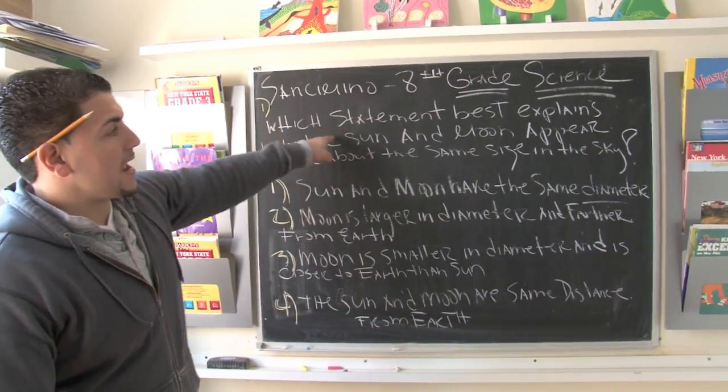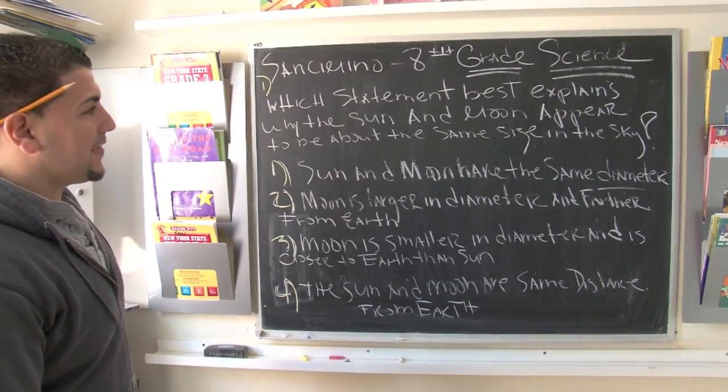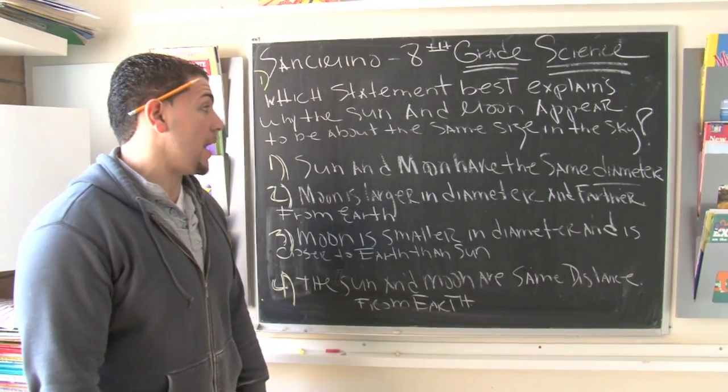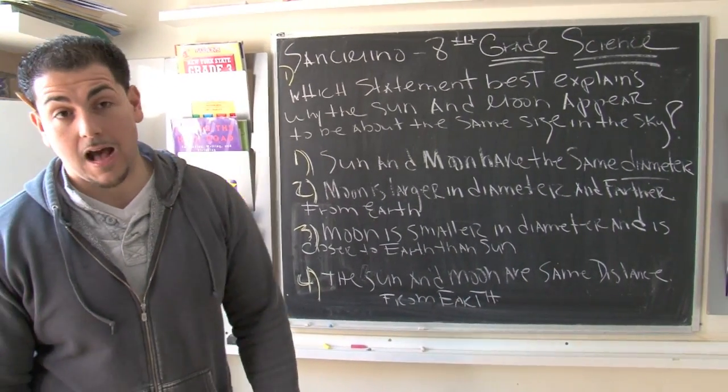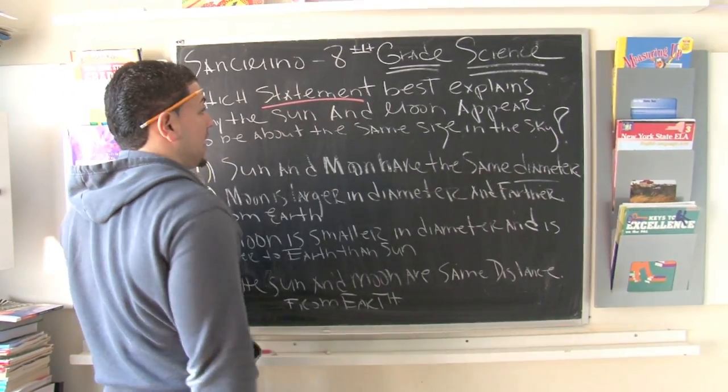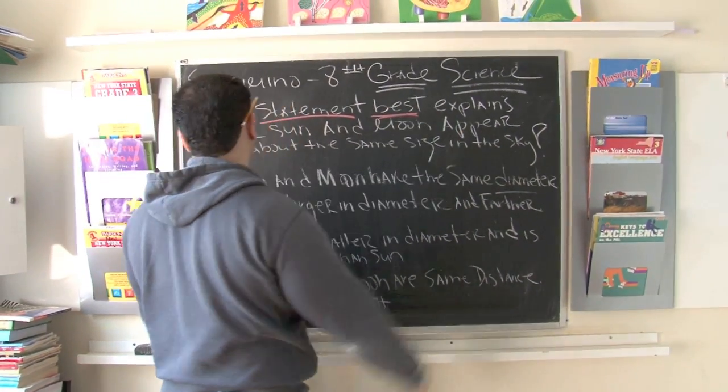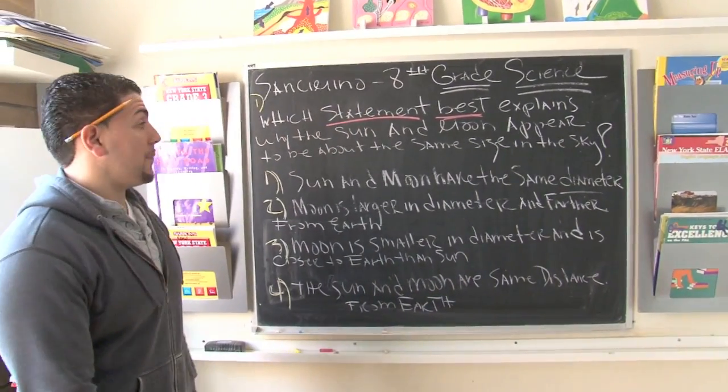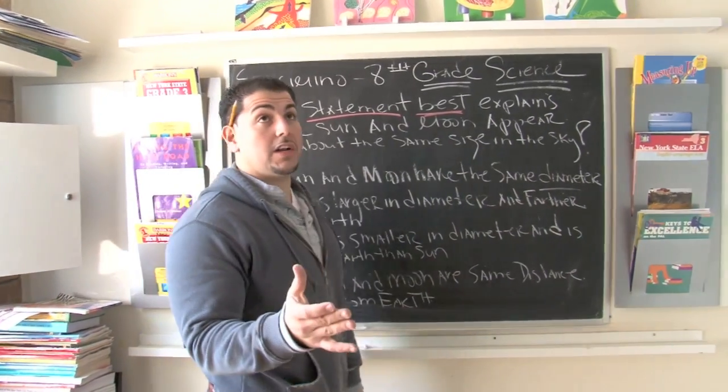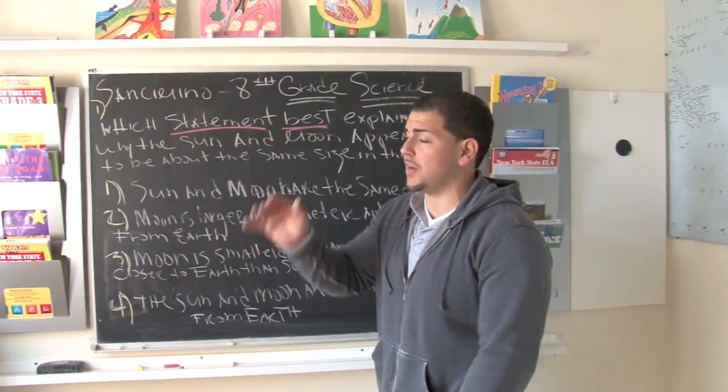So here we go. It says, which statement best explains why the sun and the moon appear to be about the same size in the sky? So what we're looking for is a statement that best explains why the sun and the moon appear to be about the same size in the sky. And when we're looking up in the sky, the first thing we think about is the sun and we think about the moon.